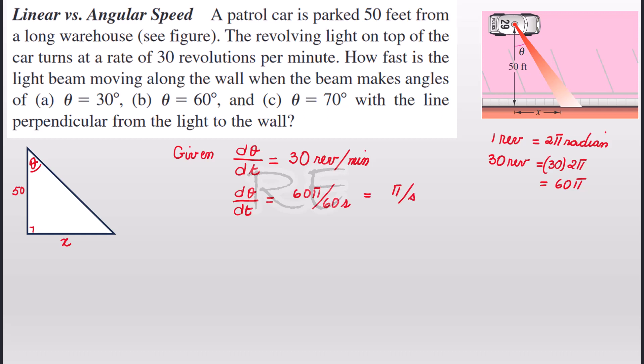Now we want to find x and tangent is opposite over adjacent, so tangent angle theta is equal to x over 50. When we cross multiply, 50 tan θ is equal to x.